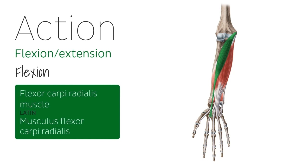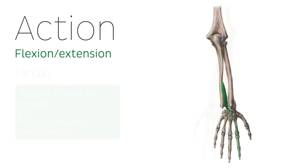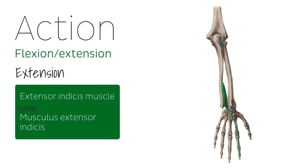For example, the flexor carpi radialis, which is one of the superficial flexors of the forearm and is responsible for flexing the hand at the wrist joint or radial abduction. The term flexion describes the action of bending a limb. Next is extension, which describes the opposite action of flexion. The extensor muscles return the limb to its original position or straighten the limb. For example, the extensor indicis muscle straightens the index finger.